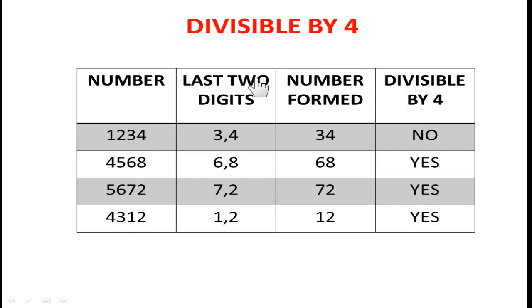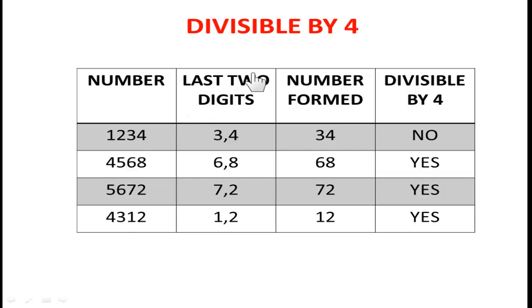Next, the divisibility rule of 4. Take the number 1234 — look only at the last two digits, which form the number 34. If 34 is divisible by 4, then the total number is divisible by 4. But 34 is not divisible by 4, so 1234 is also not divisible by 4. For the second number 4568, take the last two digits: they form the number 68. Since 68 is divisible by 4, the total number 4568 is also divisible by 4.